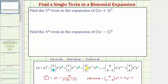Let's apply this pattern to find the fifth term in the expansion of the quantity two x plus three raised to the power of seven, and we'll also compare the results to the formula. Because we have the quantity two x plus three raised to the power of seven, n is seven. Because we're looking for the fifth term, r is equal to five.